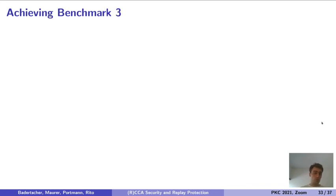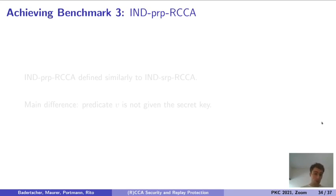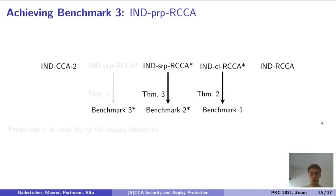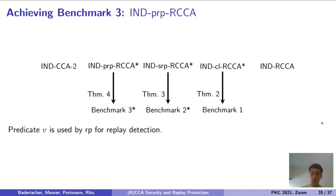We introduce SRP-RCCA security and show that it captures benchmark 2. Here, predicate V can be used by the decryption protocol for detecting and thus filtering out ciphertext replays. To achieve benchmark 3, which we did not introduce in this presentation, we introduce INT-PRP-RCCA security. This security notion is defined very similarly to INT-SRP-RCCA security. The main difference is that predicate V is not given the secret key. We show that INT-PRP-RCCA security captures benchmark 3, and the predicate V given by INT-PRP-RCCA security can be used for detecting and filtering out ciphertext replays.